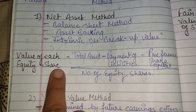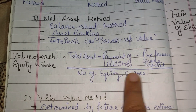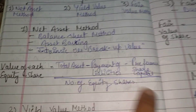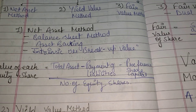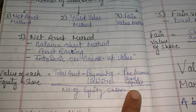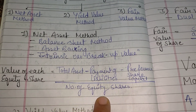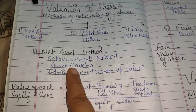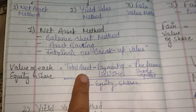The formula for the Net Asset Method: Value of each equity share equals Total Assets minus payment of liabilities minus Preference Share Capital, divided by Number of Equity Shares. This is the formula for the Net Asset Method.